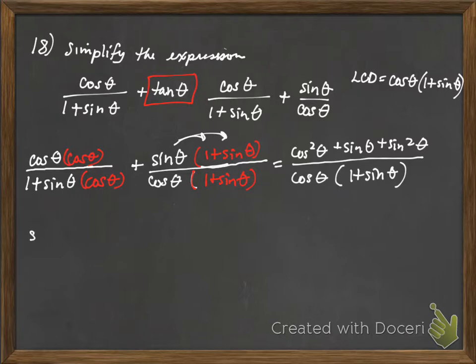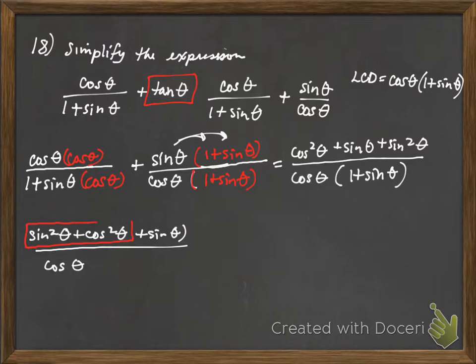Rearranging this, I can write this as sine squared theta plus cosine squared theta plus sine theta, all over cosine theta. And the reason I rewrote that is I wanted you to see that this is the Pythagorean identity. Pythagorean identity says that sine squared theta plus cosine squared theta is equivalent to 1. So 1 plus sine theta is what I have up in that numerator now. I'm going to take that out, and it's going to be over cosine theta times 1 plus sine theta.